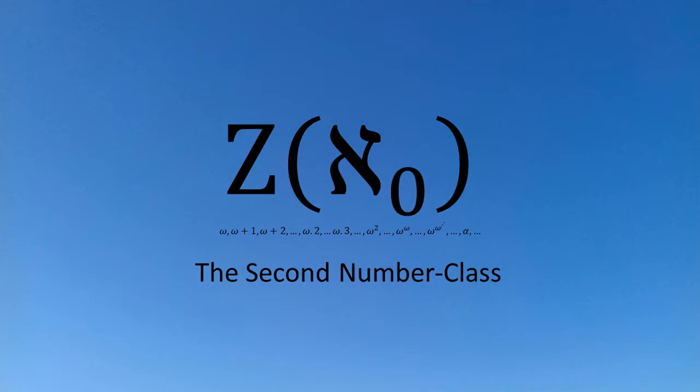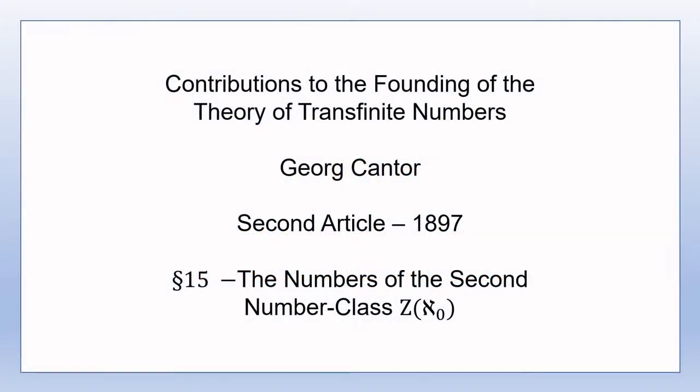Welcome to this video — video number 15 in my series of videos on George Cantor's 1895 and 1897 articles on the theory of aggregates and transfinite numbers. Section 15 is titled 'The Numbers of the Second Number Class.'